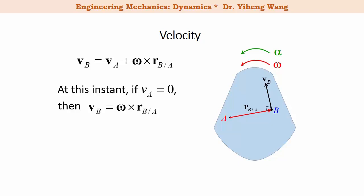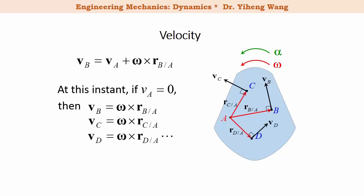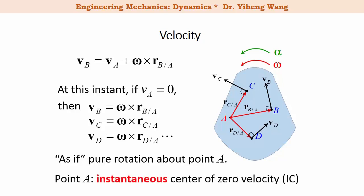And for any other point on this rigid body — point C or D — we can write similar equations and draw similar conclusions. It is as if this rigid body is rotating about a fixed axis that passes through point A. In this case, point A is known as the instantaneous center of zero velocity. Pay attention to the word 'instantaneous', which indicates that point A only has zero velocity at this instant, and at this instant alone can it be considered as the center of rotation.